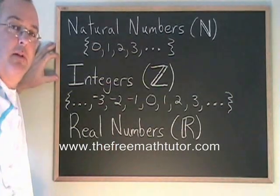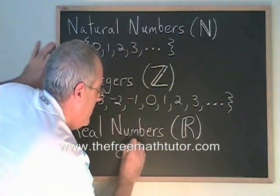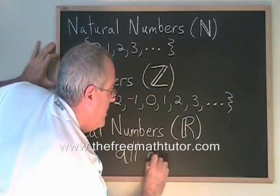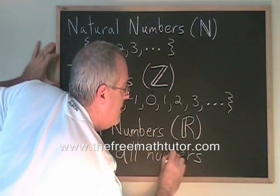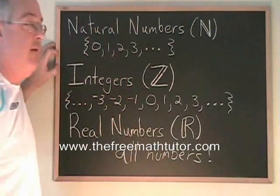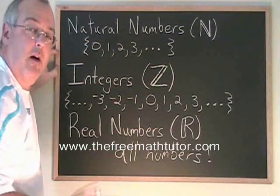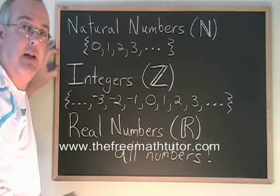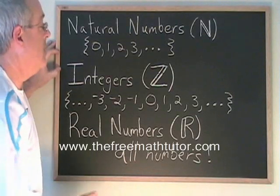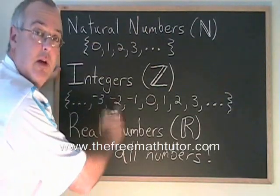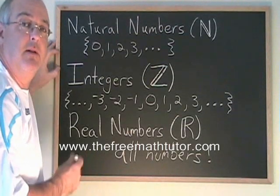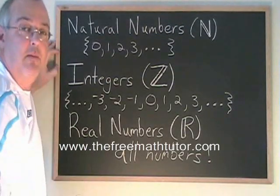Real numbers is all numbers. Real numbers includes the natural numbers and the integers, all the positive and negative whole numbers and 0, but it also includes all the fractions and decimals that are located in between these whole numbers. Real numbers includes every other type of number.